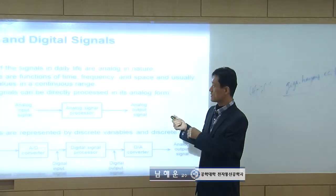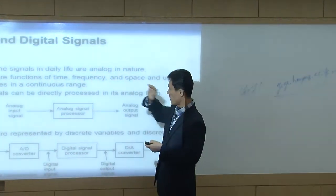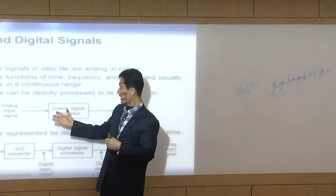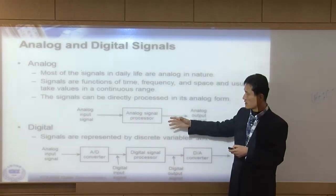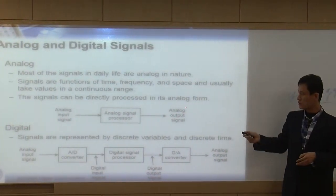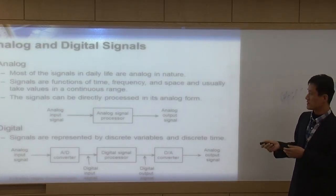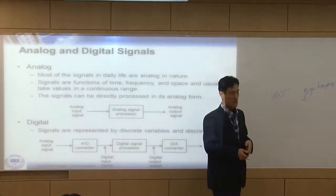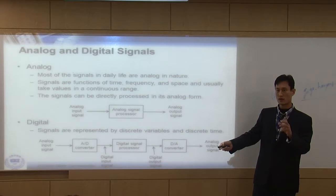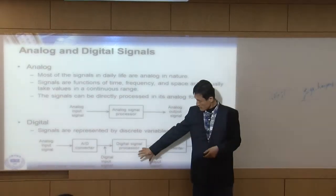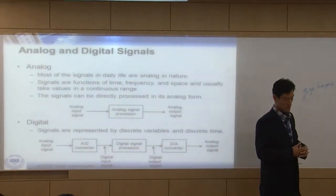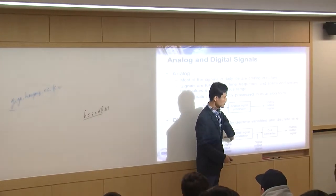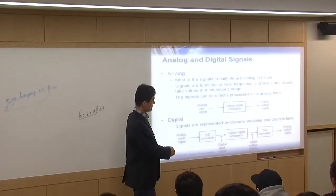Yesterday we discussed analog and digital signals. The analog signal is the real world signal — every signal you see in the world is analog. In traditional analog signal processing, you start from analog input, do analog processing, and get an analog output. In digital signal processing, the real analog signal goes into an A2D converter, which converts it to a digital signal for digital signal processing, and the output is again a digital signal.